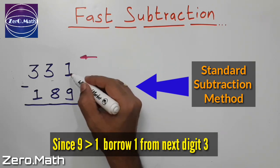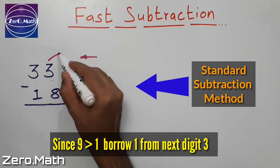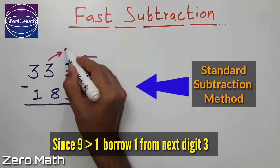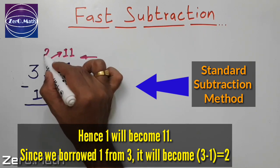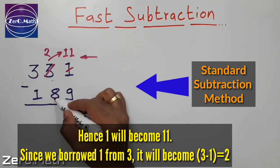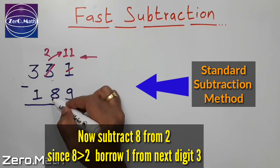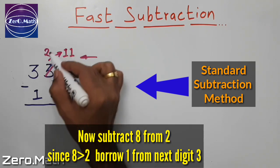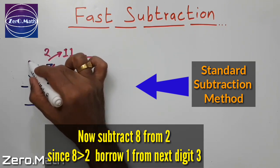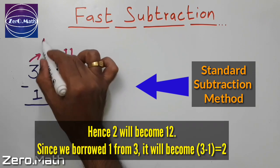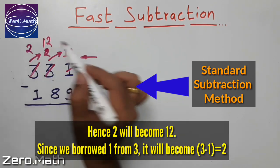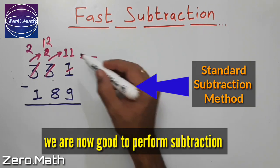Since 9 is greater than 1, I will take a borrow from this 3. This 1 will become 11 and this 3 will become 2. Now subtract 8 from 2. Since 8 is greater than 2, I will again take borrow from this 3. This 2 will become 12 and this 3 will become 2. Now we are good to perform subtraction.